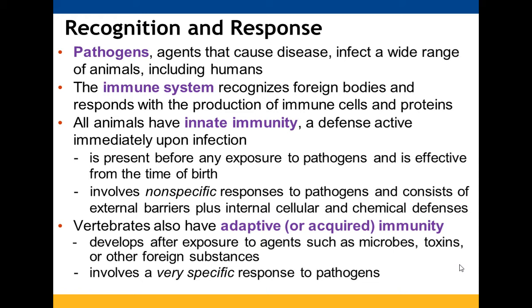Chapter 43 is about the immune system. Pathogens — bacteria, viruses, fungi — are agents that can cause disease and affect all sorts of animals, not just humans.